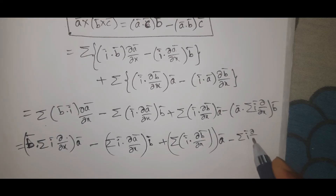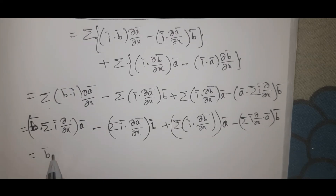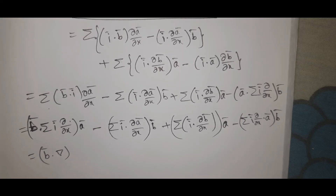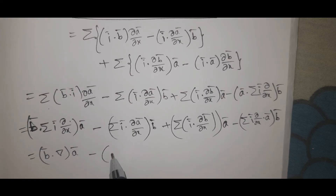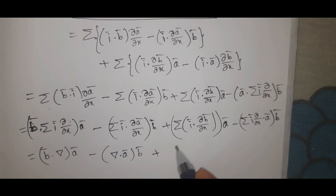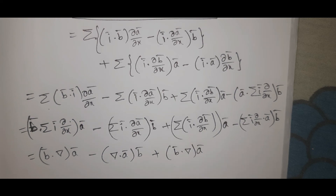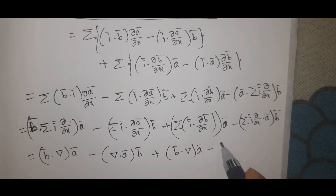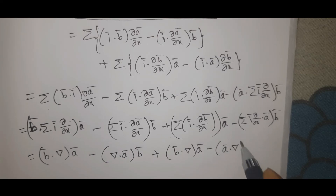Simplifying: summation i̅ ∂/∂x into ā into b̄ equals b̄ dot ∇ā minus del dot ā times b̄ plus b̄ dot ∇ā minus ā dot ∇b̄.